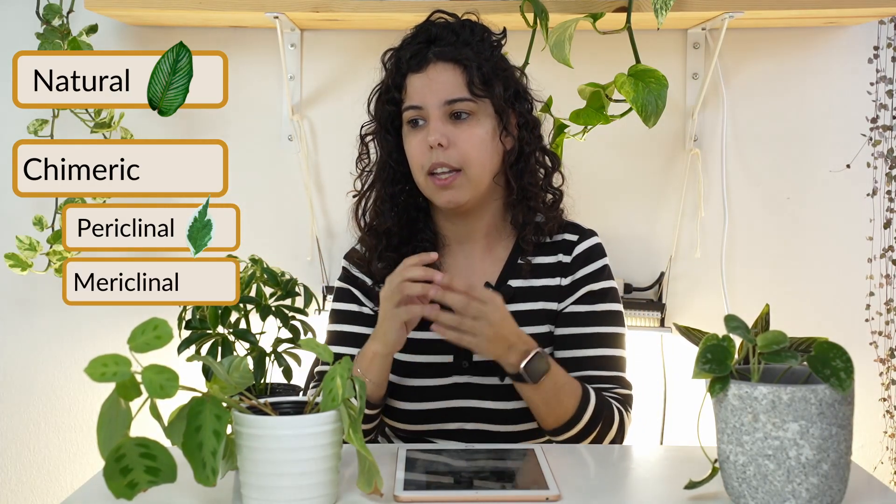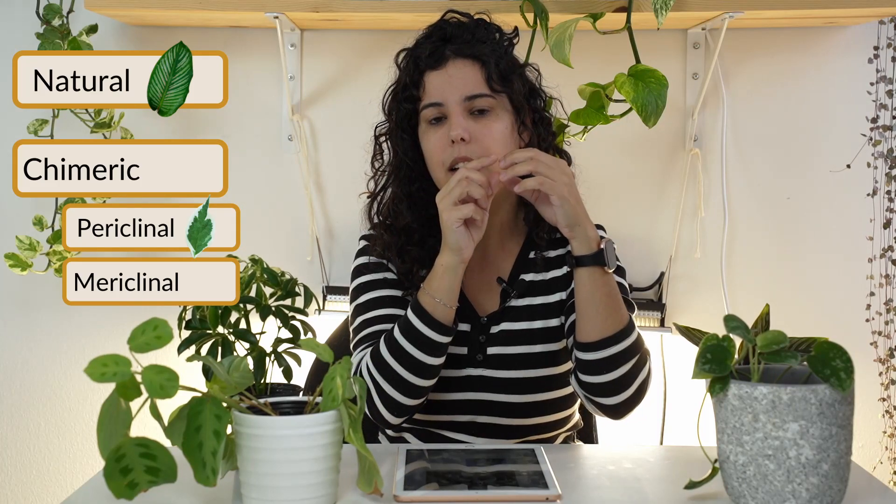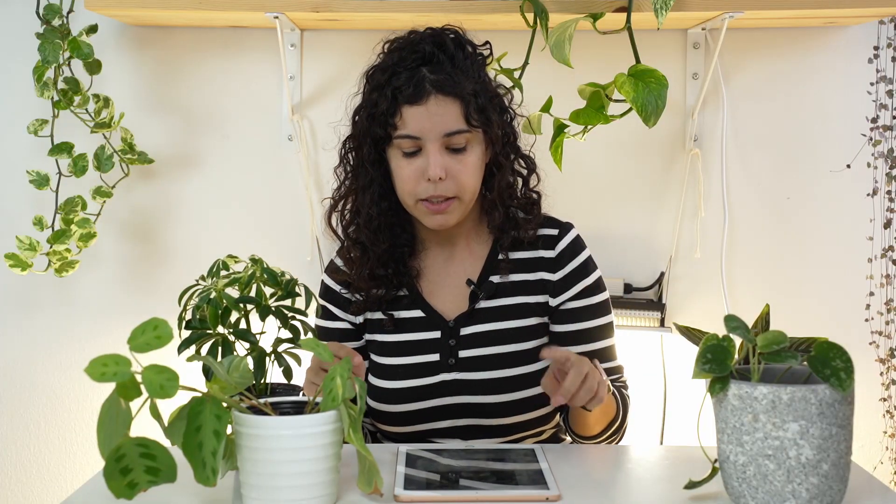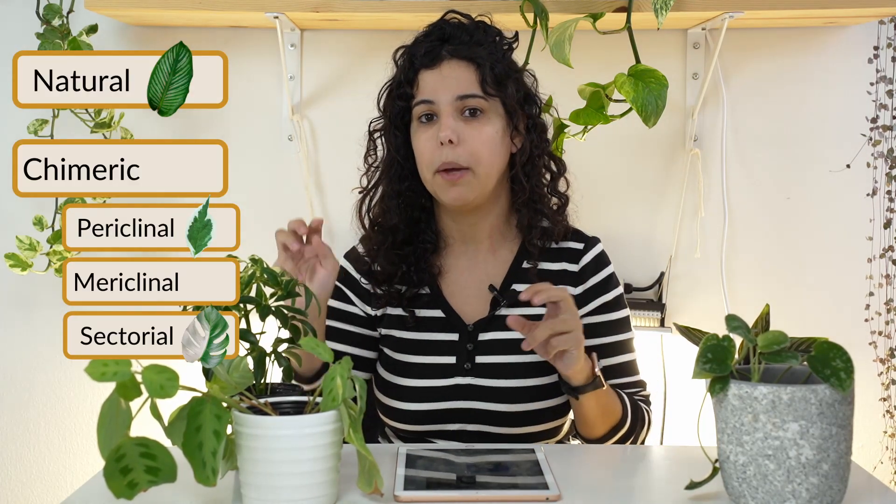The second type of chimeric variegation is called uriclinal. This is when the cells inside the layer try to reproduce as a different type of cell but don't reproduce all the way across the layer, so you'd have half of the leaf or half of the plant variegated on the border. This is a very unstable type of variegation — you can't even easily find examples of it.